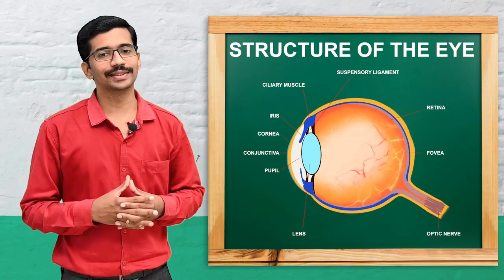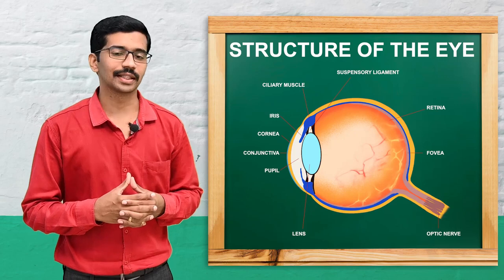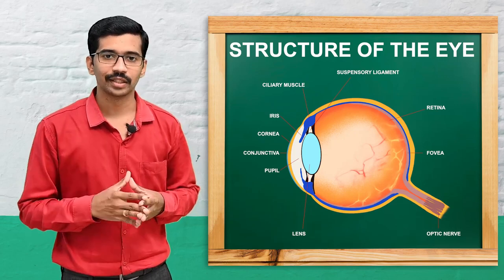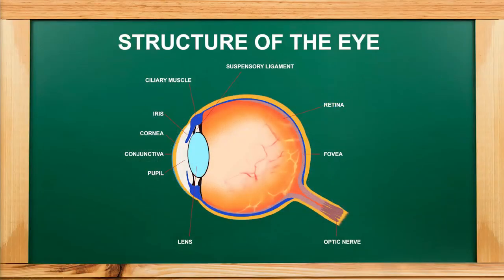The eye is an important organ of sight which is located in the orbital cavity of the skull. The diameter of the eyeball is approximately 24 millimeters, or we can say 2.4 centimeters.